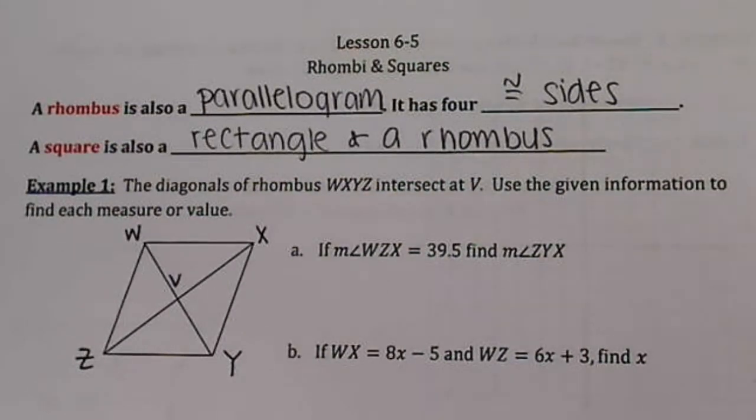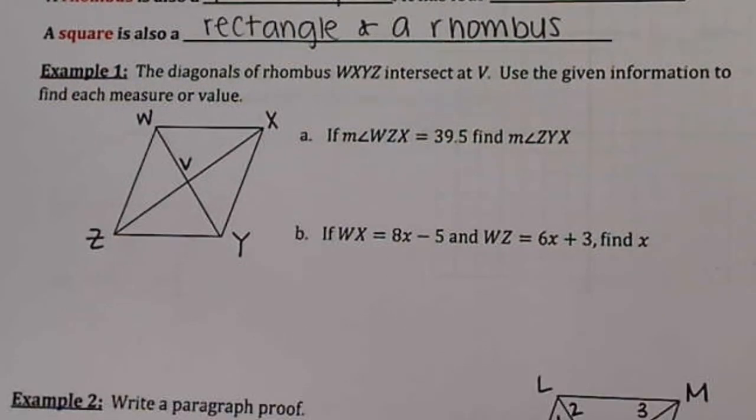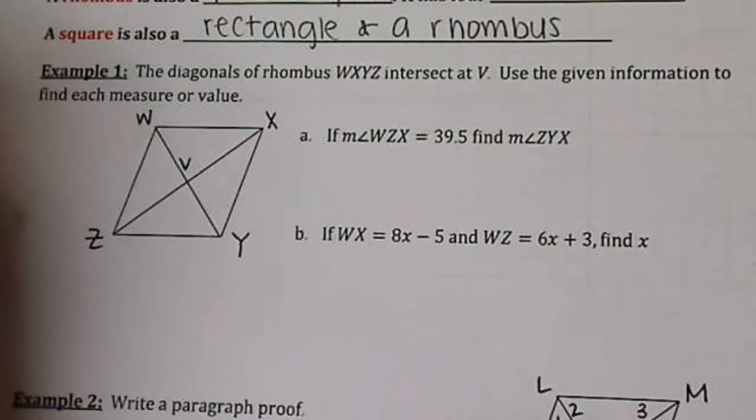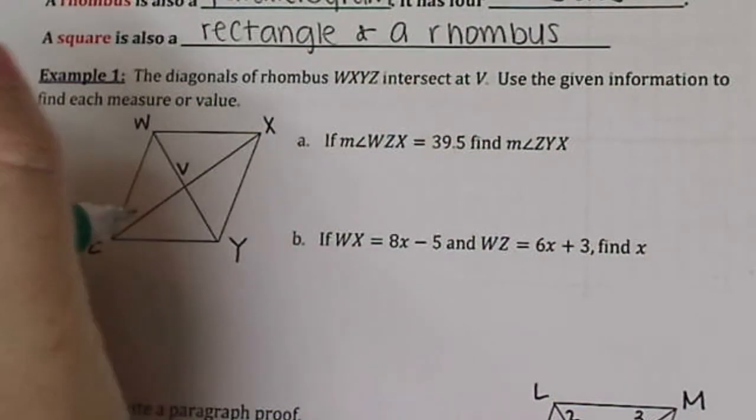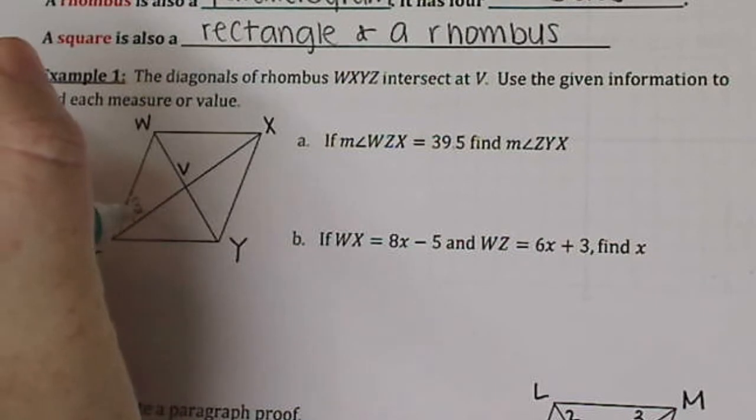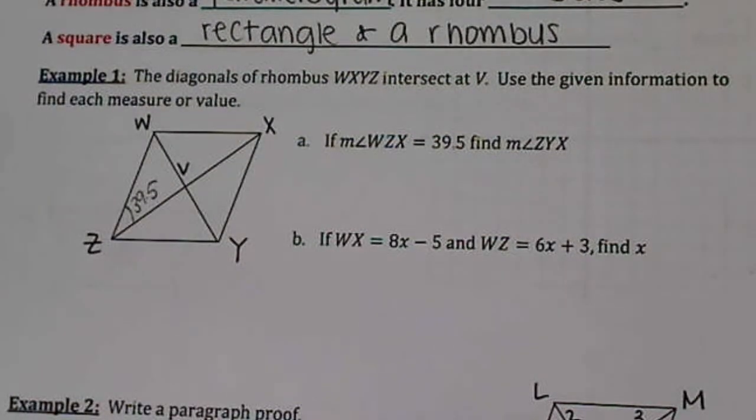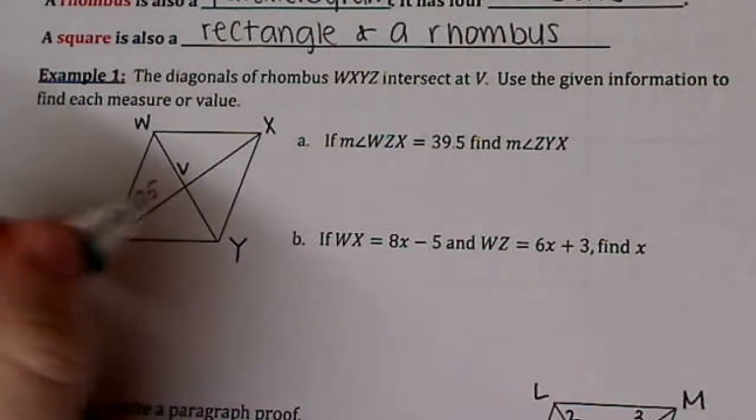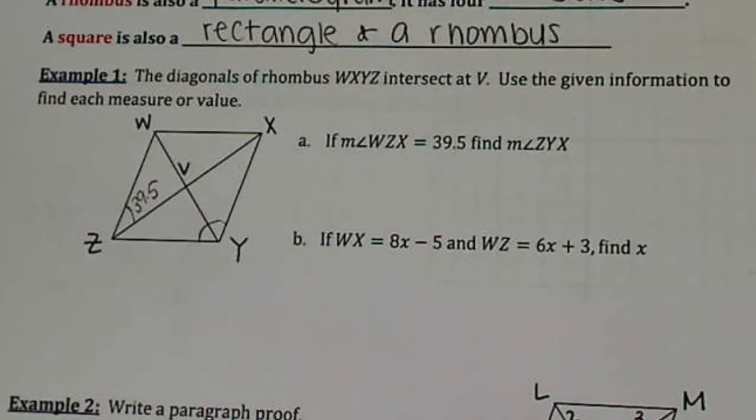In example 1, we know that we have a rhombus, which means all of our sides are congruent, and we know that they intersect at V, the diagonals. We want to find the measure of angle WZX if it equals 39.5. So this angle right here is 39.5, and we want to find ZYX, this big angle over here.